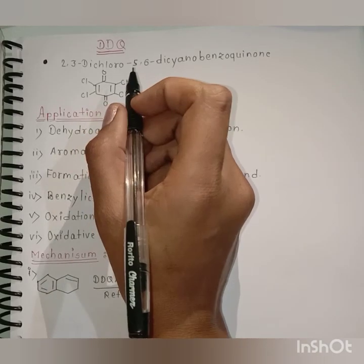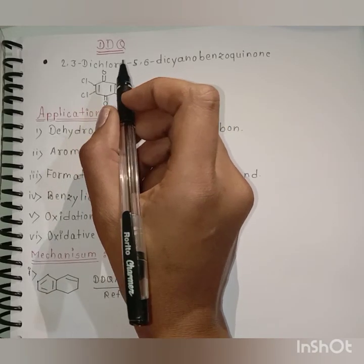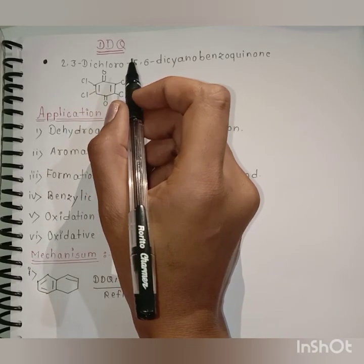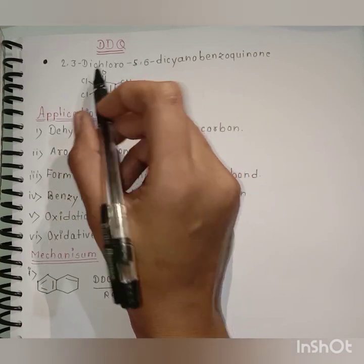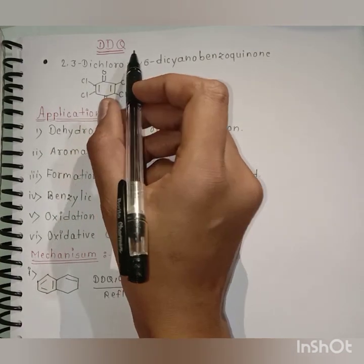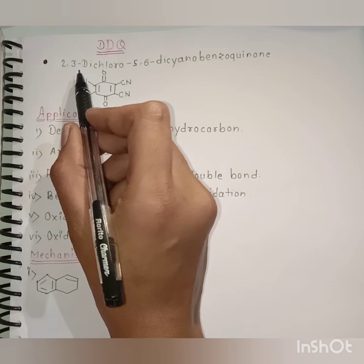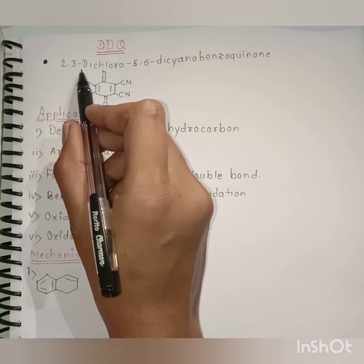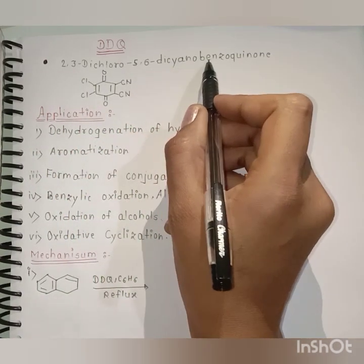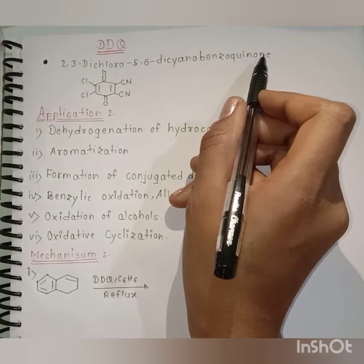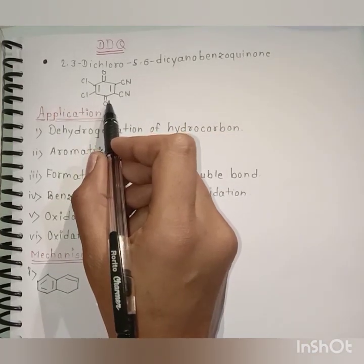Welcome to my channel SP Star Chemistry. Today I am going to discuss one of the important reagents known as DDQ. DDQ is also known as 2,3-dichloro-5,6-dicyanobenzoquinone, and its structure is shown here.